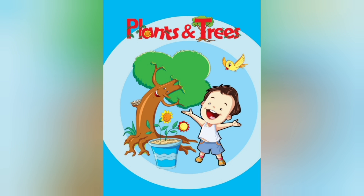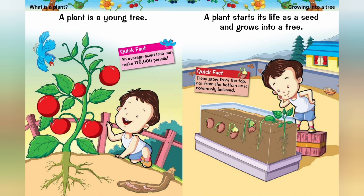Plants and Trees. What is a plant? A plant is a young tree growing into a tree. A plant starts its life as a seed and grows into a tree. An average size tree can make 1,70,000 pencils.